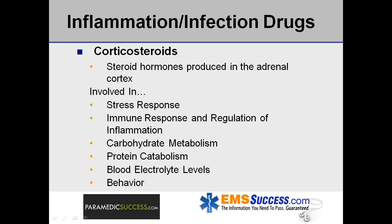Corticosteroids are a class of steroid hormones produced in the adrenal cortex. They are involved in a wide range of physiological systems such as stress response, immune response, and the regulation of inflammation, carbohydrate metabolism, protein catabolism, blood electrolyte levels, and behavior.